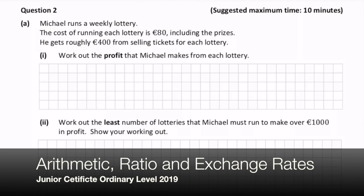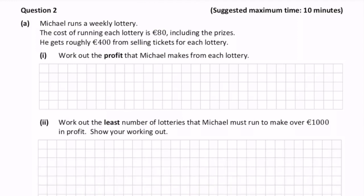Michael runs a weekly lottery. The cost of running each lottery is 80 euros, including the prizes. He gets roughly 400 euros from selling tickets for each lottery.